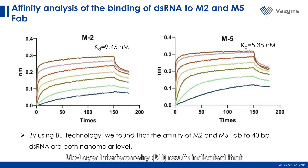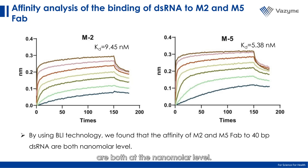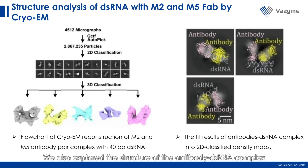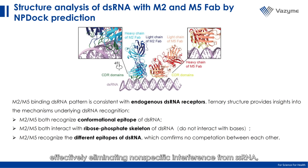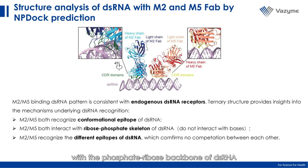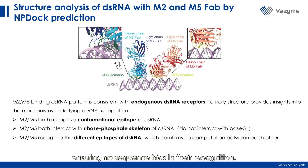BLI results indicated that the affinities of both M2 and M5 to 40 bp dsRNA are at the nanomolar level. We also explored the structure of the antibody-dsRNA complex using cryo-electron microscopy and MD simulation. Both approaches confirmed that M2 and M5 antibodies recognize the conformational epitopes of the dsRNA double helix, effectively eliminating non-specific interference from ssRNA, DNA, or other molecules. Both antibodies interact with the phosphate-ribose backbone of the dsRNA rather than the bases, ensuring no sequence bias in their recognition.